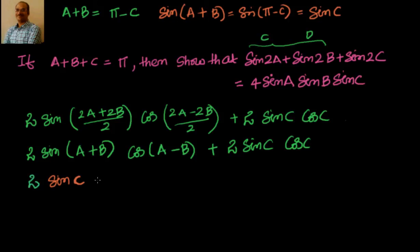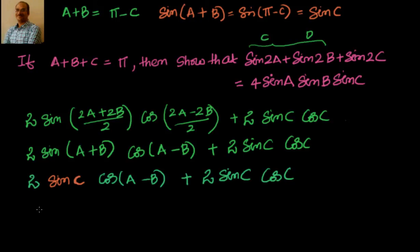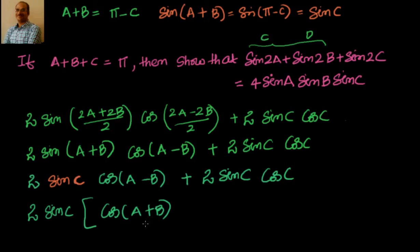So this becomes 2 sin c cos(a minus b) plus 2 sin c cos c. Now I can take 2 sin c common: 2 sin c into (cos(a minus b) plus cos c).